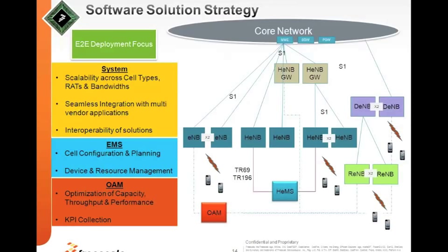Looking at the software solution strategy: a software solution is really needed with an end-to-end deployment focus — key for carriers to deploy solutions very quickly. At the system level, the solution should be scalable across cell types, radio access technologies — 3G, 4G, Wi-Fi — and bandwidth configurations, for example LTE with 5 MHz, 10 MHz, or 20 MHz solutions.